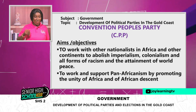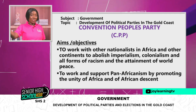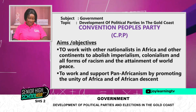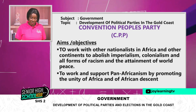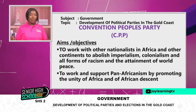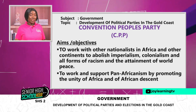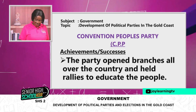Another aim was to work with other nationalists in Africa and other continents to abolish imperialism and all forms of racism — where people see their races as more superior than others — in the attainment of world peace. To support Pan-Africanism by promoting the unity of Africa and of African descent, including African-Americans or African-Jamaicans who could trace their roots to Africa.